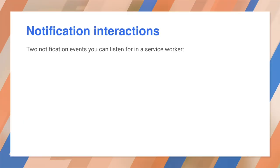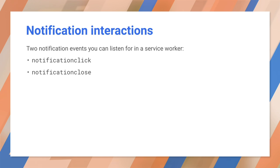Notification interaction events are handled in the service worker — tapping, clicking, or closing the notification. There are two notification interactions you can listen for. The notification close event only triggers when the notification is dismissed via a direct action on the notification; if the user dismisses all notifications, the event will not trigger. If the user clicks the notification or an action button, the notification click event is triggered. If the user clicks on an action, that action is attached to the event object of the notification click handler, and you can check which action was triggered and handle each one separately.